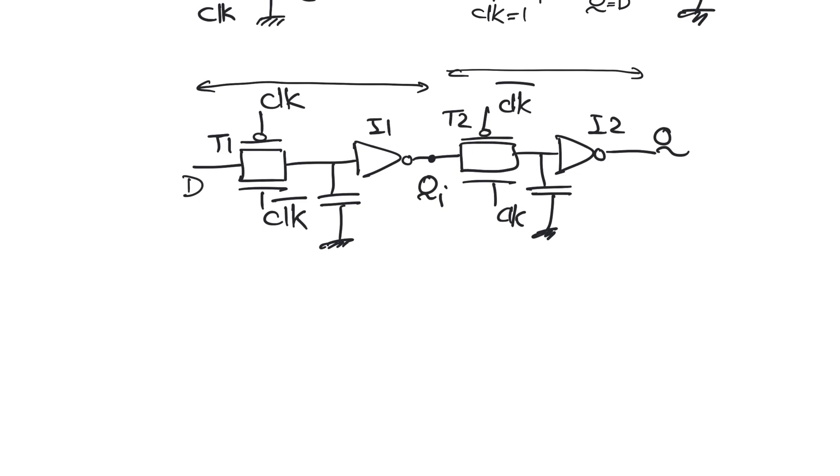As in the static latch we do not ever have a direct path between D and Q. For D to pass to Q it first has to pass from D to QI and then from QI to Q. D is able to pass to QI in the zero phase of the clock and QI is able to pass to Q in the one phase of the clock. A zero phase followed by a one phase is a positive edge and thus this is a positive edge triggered register.